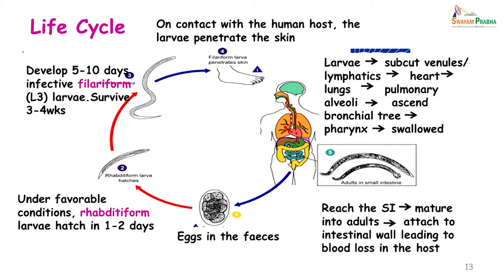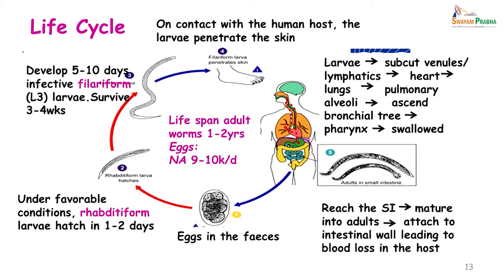The adult worm attaches to the intestinal wall, leading to blood loss. The worms move from patch to patch, sucking blood and secreting an enzyme so that bleeding continues even after they move off. The lifespan of an adult worm is 1 to 2 years. Each adult Necator americanus worm produces 9,000 to 10,000 eggs per day, while Ankylostoma duodenale produces 25,000 to 30,000 eggs per day.